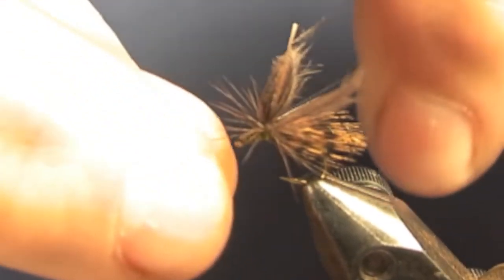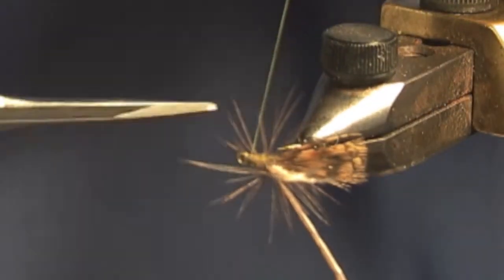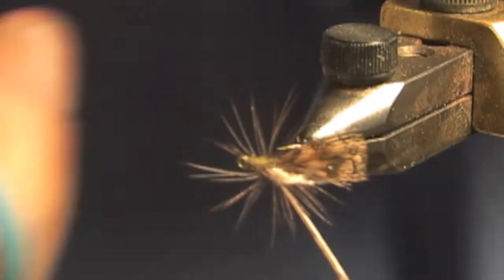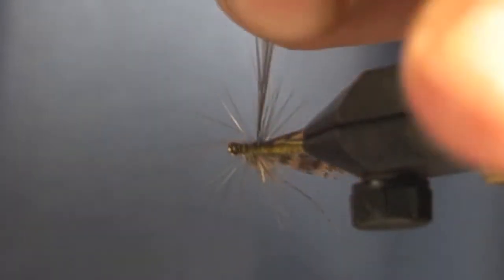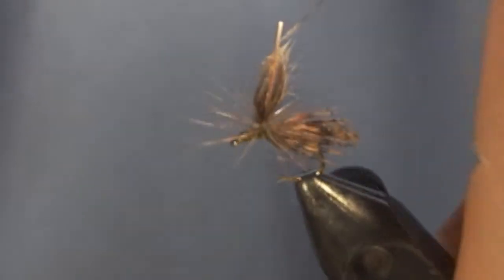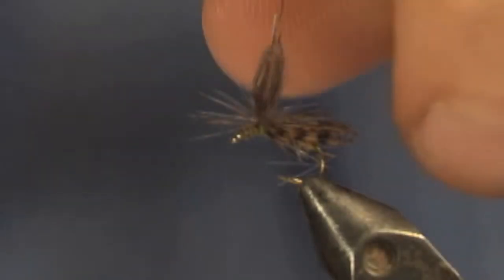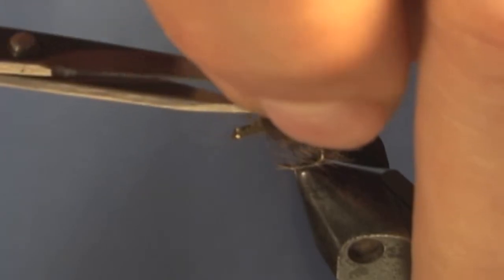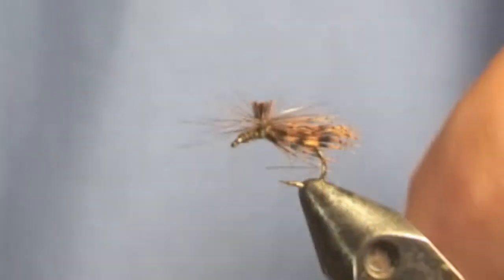Now I don't normally use any head cement for most of my flies. However, on these parachutes, because you're cutting away the excess hackle here. And this stub of a feather here. Make sure I don't cut anything that I don't intend to. I'm going to cut this down so there's just a little bit of a stub left.